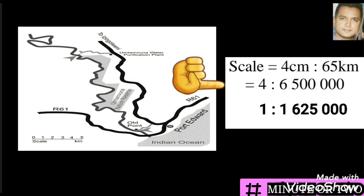The next step is to convert both sides to centimeters, and this brings us to 4 is to 6,500,000. Lastly, we need to leave our scale in the format of 1 is to something. So in order for us to get this, we divide both sides by 4. Dividing both sides by 4, we get 1 is to 1,625,000. Now remember this is in centimeters.